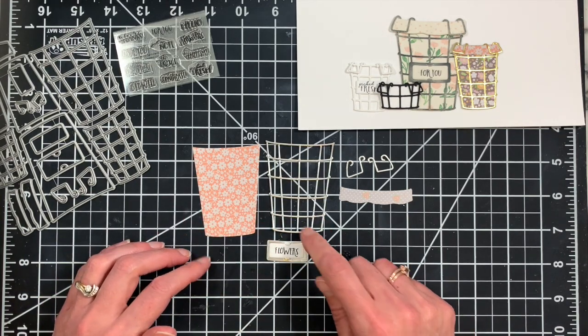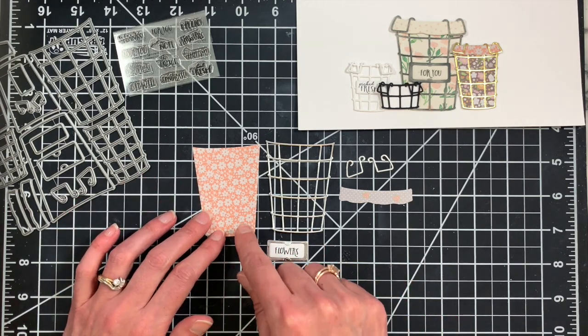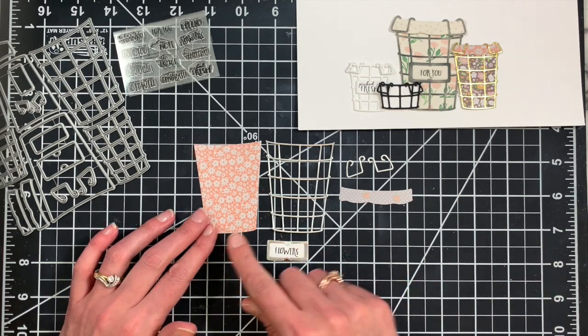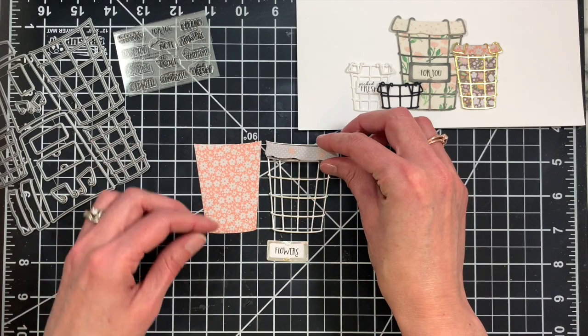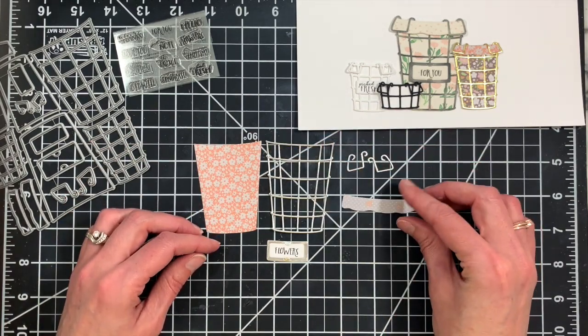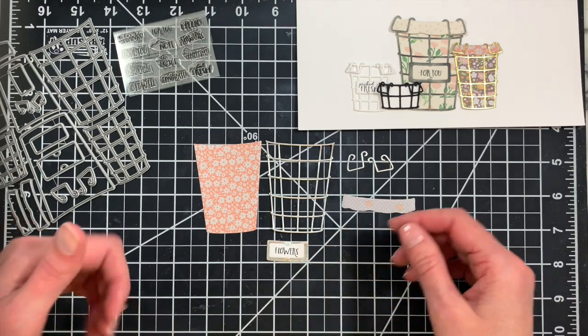There are optional liner pieces for each of the different sizes. Like I said, there's three sizes, and so there's liners and then also a little ruffle detail for each of those three sizes. Those are of course optional. You can pick and choose what pieces you want to use if you want to just create some open wire baskets.